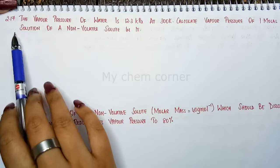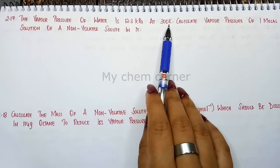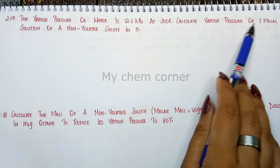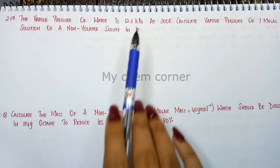Next is question number 2.17. The vapor pressure of water is 12.3 kilopascal at 300 Kelvin. Calculate vapor pressure of one molal solution of a non-volatile solute in it.